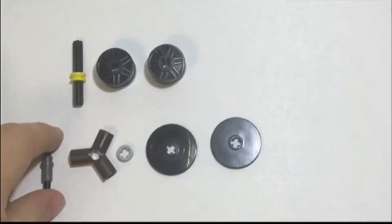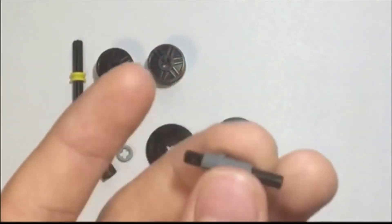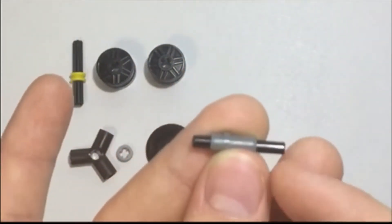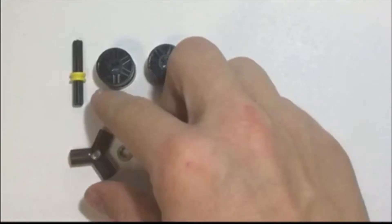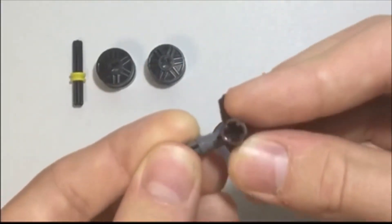First thing that you want to start off with is you'll get one of these Technic pieces right here, and you'll get one of the shorter rods and stick it inside it. And then you'll get this piece right here and stick it through there.